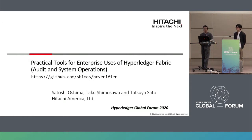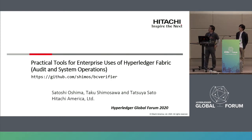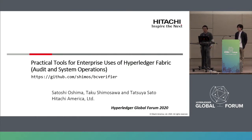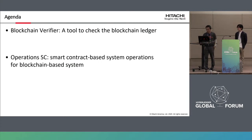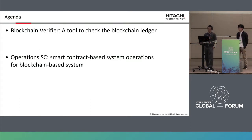Especially the audit part, you can find the source code at this URL. This work was originally done by Taku Shimosawa, who was prepared to present this work, but unfortunately he got flu type A, so I'm a proxy for Taku. Today we will show you two tools: blockchain verifier and system operations smart contract.